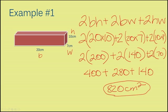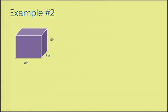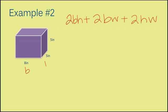Let's move on to example number 2. So, I'm going to start by rewriting my formula again. 2BH plus 2BW plus 2HW. Before I plug anything in this time, I'm going to go ahead and identify all of the parts of my rectangular prism. So, I have my base is 8, my width is 5, and my height is also 5.